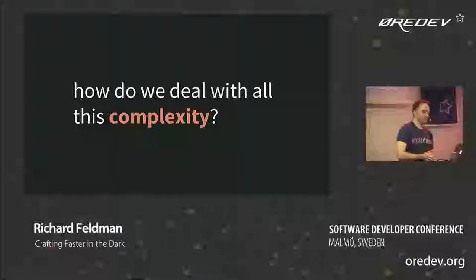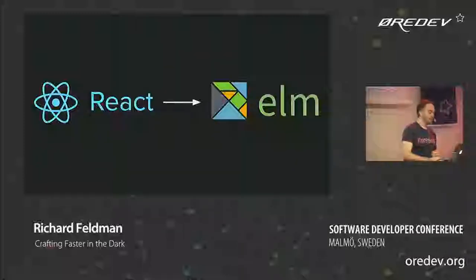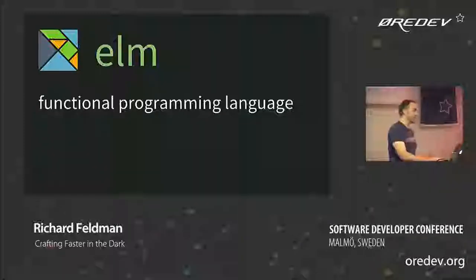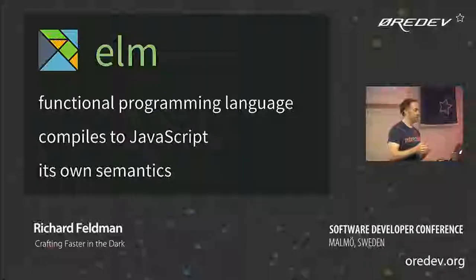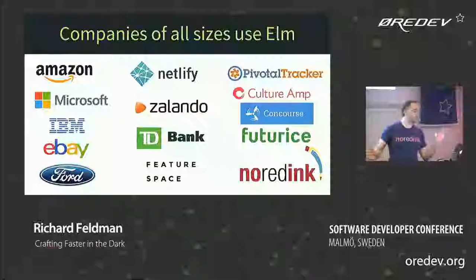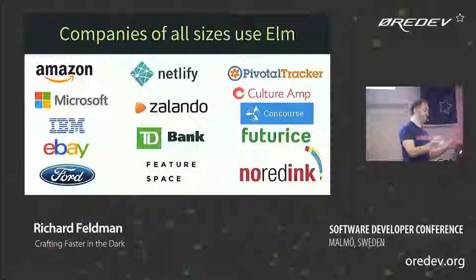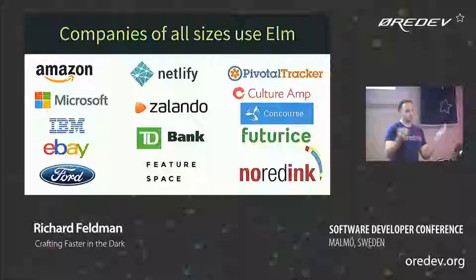One answer is what I've done at my company, NoRed Inc. We used to use React, and now we've been using a technology called Elm. Elm is a functional programming language that compiles to JavaScript. We've been using it to help us manage our complexity problems. It's got its own semantics — it's not actually JavaScript under the hood, not even a JavaScript dialect. It has nothing to do with JavaScript except that it compiles to it. Lots of companies are using Elm, of all sorts of different sizes.